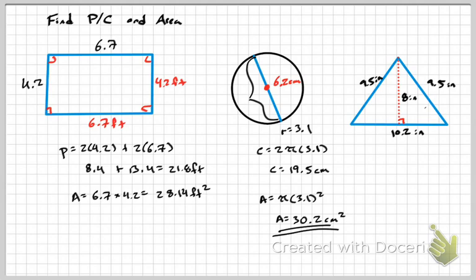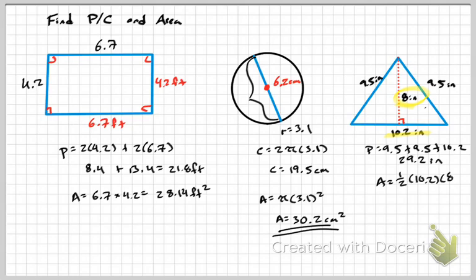For the triangle with three sides of 9.5 and a base of 10.2 inches: the perimeter is 9.5 + 9.5 + 10.2 = 29.2 inches. The area is one-half × base × height = ½ × 10.2 × 8. Since ½ × 8 = 4, that simplifies to 10.2 × 4 = 40.8 square inches.